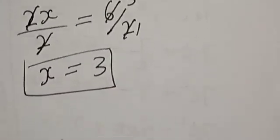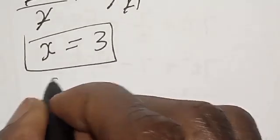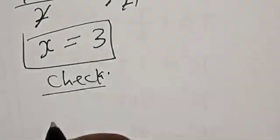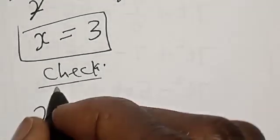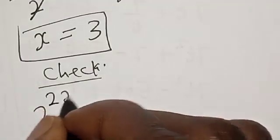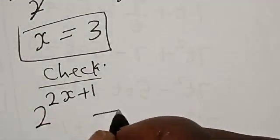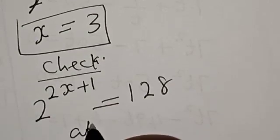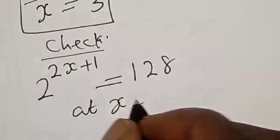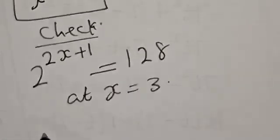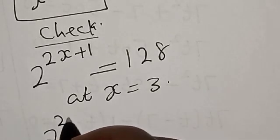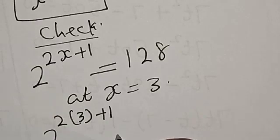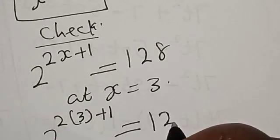Let's check to confirm if our answer is right or wrong. Check. We have the given equation: 2 raised to power 2s plus 1 is equal to 128. At s is equal to 3, we have 2 raised to power 2 into 3 plus 1. Must be equal to 128.